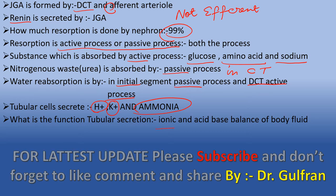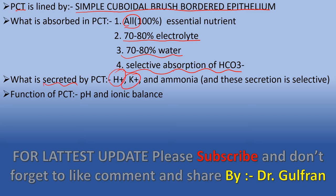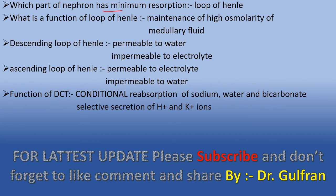The function of tubular secretion is ion and acid-base balance of the body fluid. The PCT is lined by simple cuboidal brush border epithelium. In the PCT, all essential elements are absorbed: 70 to 80% of electrolytes, 70 to 80% of water, and selective absorption of bicarbonates. The PCT secretes hydrogen ions, potassium ions, and ammonium ions selectively. The function of PCT is pH and ionic balance of the fluid.